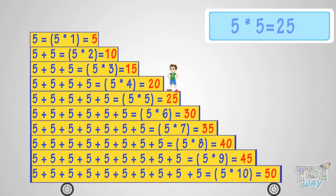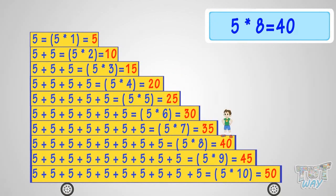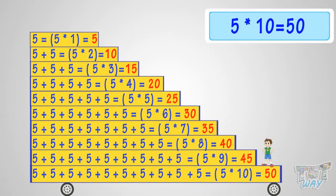5 times 6 is 30. 5 times 7 is 35. 5 times 8 is 40. 5 times 9 is 45. 5 times 10 is 50.